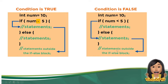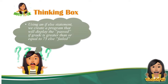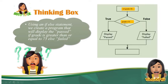This part is the statement outside the if-else block. So, let's think back — using the if-else statement, we create a program that will display 'passed' if the grade is greater than or equal to 75; else, 'failed.' So when the grade is greater than or equal to 75, it displays 'passed.' Otherwise, it displays 'failed.' This will be our condition: grade is greater than or equal to 75.